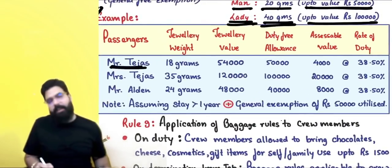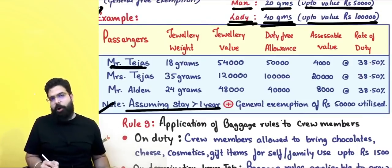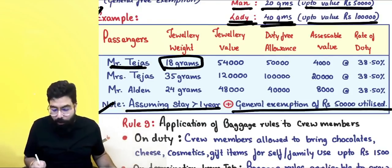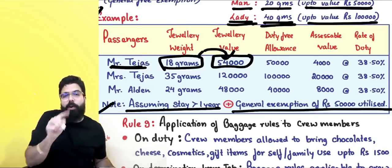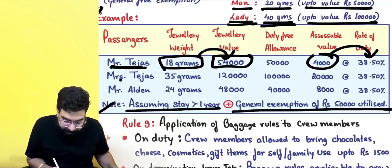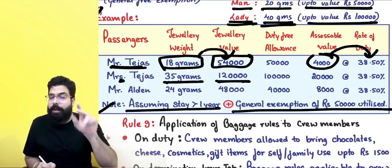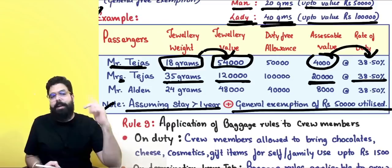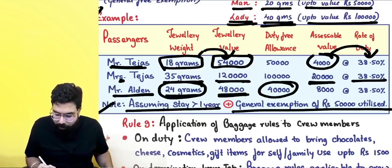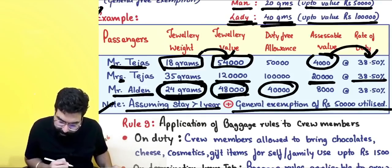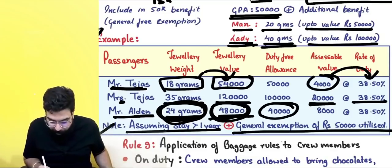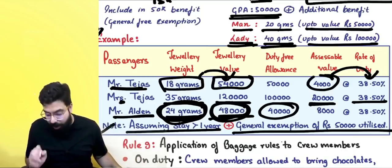Example: Mr. Tajus stayed abroad for more than one year, GFA already utilized. His additional jewelry allowance is 20 grams / ₹50,000. He carried 18 grams — within weight limit — but value is ₹54,000, so ₹4,000 excess attracts 35% + 10% SWS = 38.5% duty. Mrs. Tajus: 35 grams carried against 40 gram limit, but value ₹1,20,000 — excess ₹20,000 attracts 38.5% duty. Mr. Eldon: 24 grams / ₹48,000 — only 20 grams / ₹40,000 allowed; excess is 4 grams = ₹8,000 (₹2,000/gram), attracts 38.5% duty.